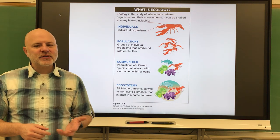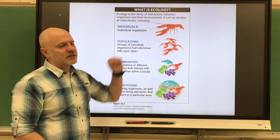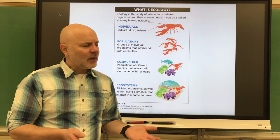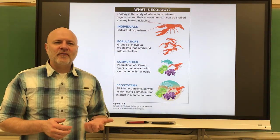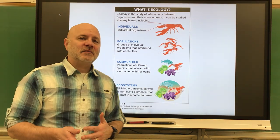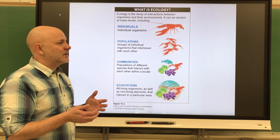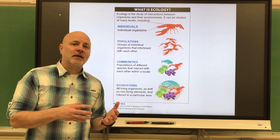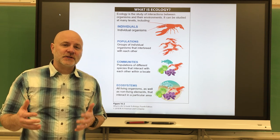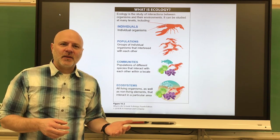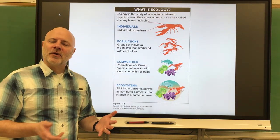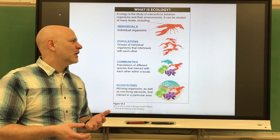The first level is the organism level — just a single individual living thing, shown here as a single lobster. Above that is the population level: a group of individuals of the same species living in the same area at the same time. Biologists define a population by the opportunity to reproduce — if they're not in the same area at the same time, they can't reproduce.